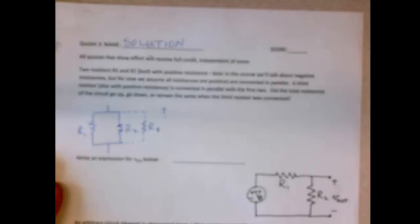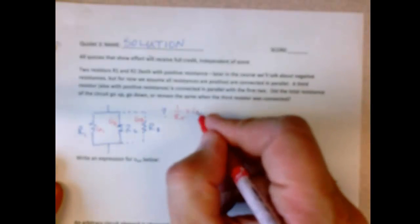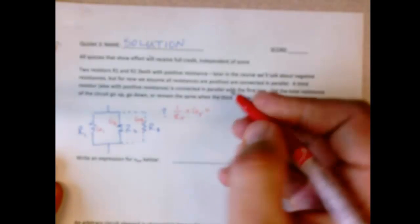So this problem is actually best considered if you think about conductance, G1, G2, G3. And you know the usual equation for resistance is actually most easily understood in terms of conductance. That's 1 over G1, plus 1 over G2, plus 1 over G3.